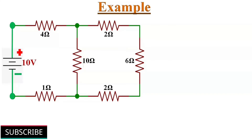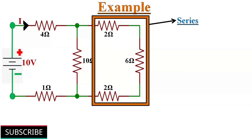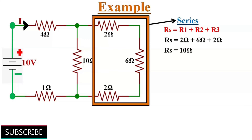Let's solve one example based on series and parallel combination of resistors. We need to find the total resistance and current flowing in the circuit. To solve this type of problem, start at the back end of the circuit and simplify towards the starting two terminals. At the back end, three resistors are connected in series, so we replace them with an equivalent resistor: RS equals R1 plus R2 plus R3, which equals 2 ohms plus 6 ohms plus 2 ohms, giving 10 ohms. So these three resistors are replaced with one 10-ohm resistor.